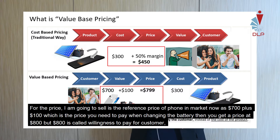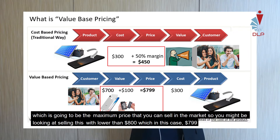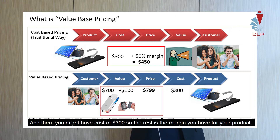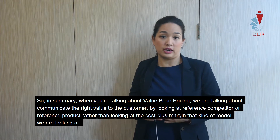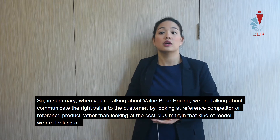The reference price of the phone in the market is 700 US dollars, plus 100 US dollars for the cost of changing a phone battery, giving a total of 800 US dollars. That 800 US dollars is called the willingness to pay — the maximum price you can sell at in the market. You might sell slightly lower, say $799, and with a cost of $300, that's the margin you have left. In value-based pricing, you communicate the right value by looking at reference competitors or reference products, rather than cost plus margin.